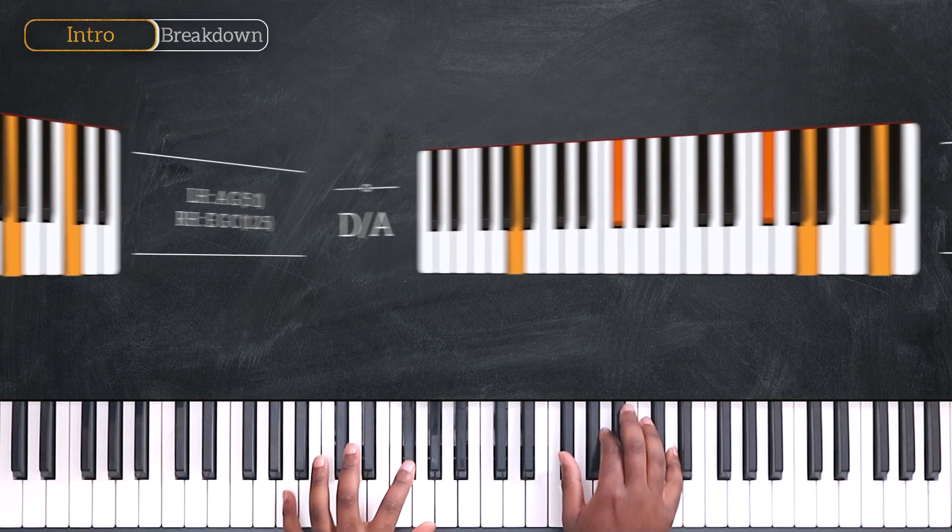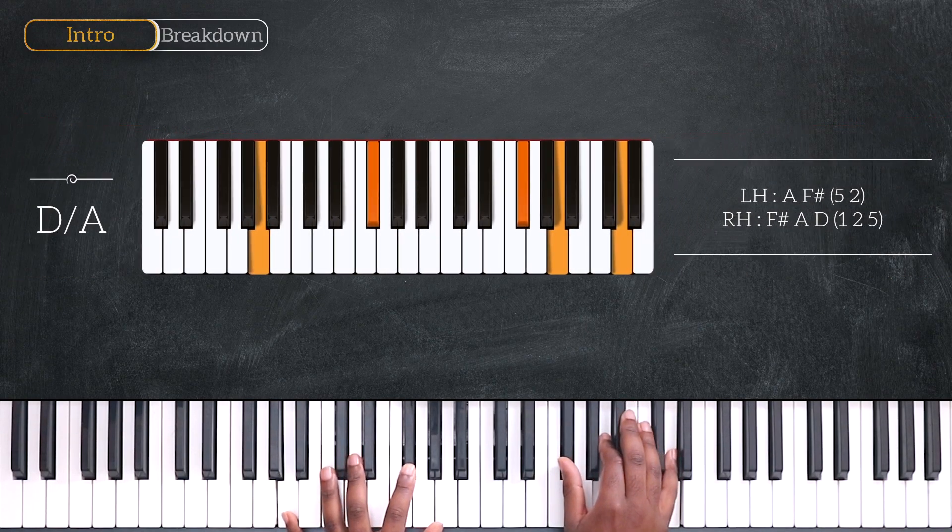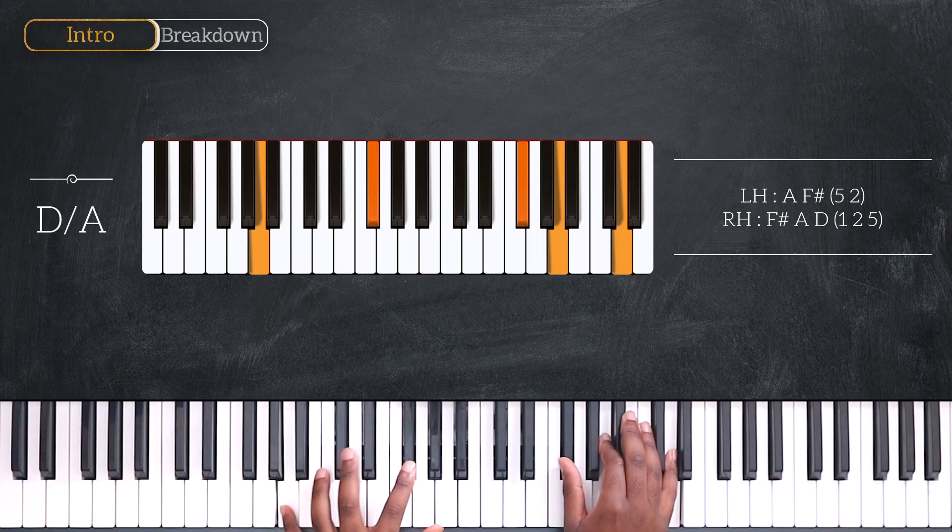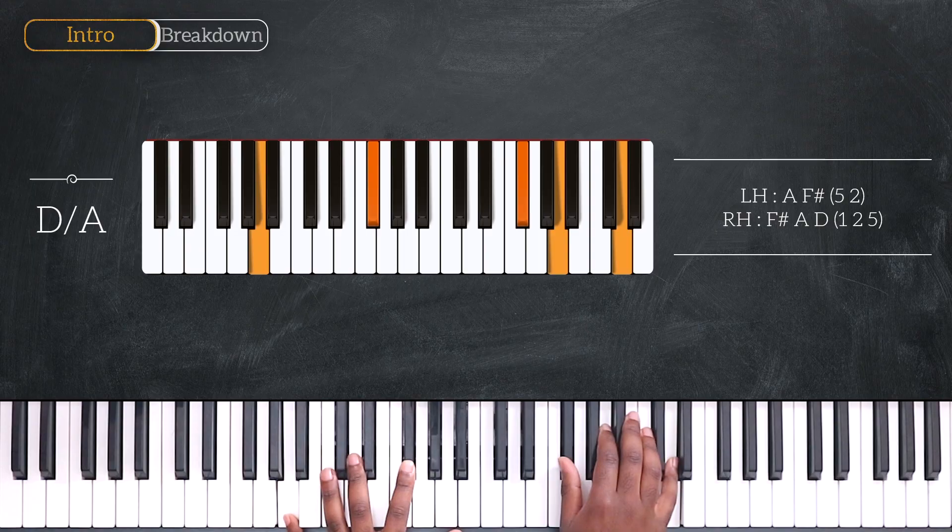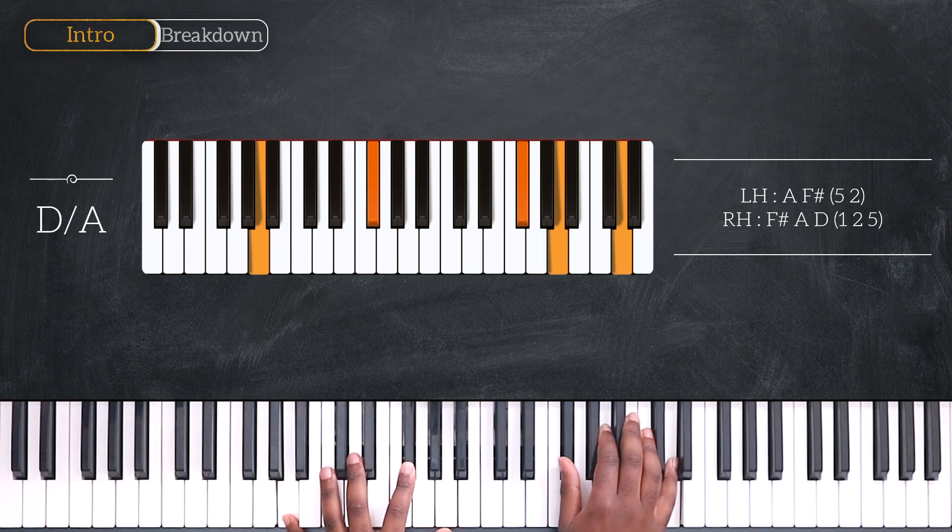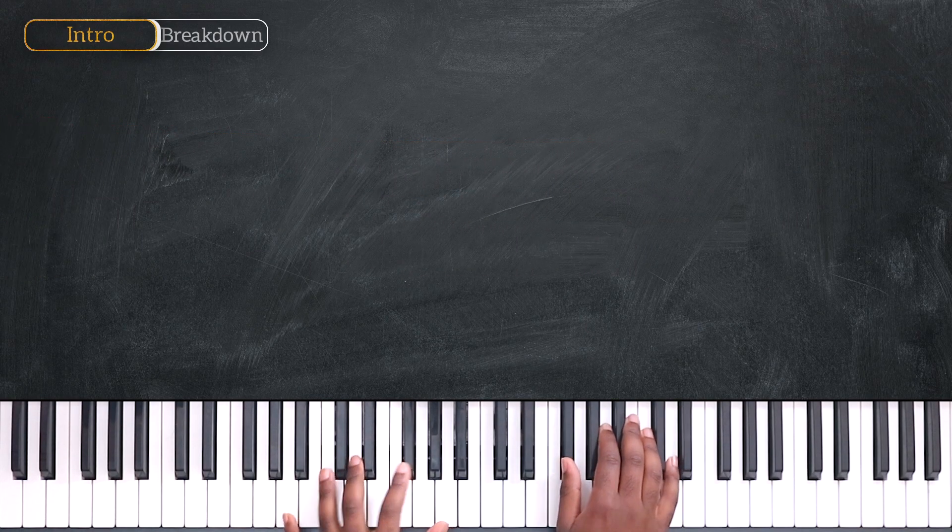And finally, this. D over A. A and F sharp. F sharp, A and D. Okay, let's quickly recap.